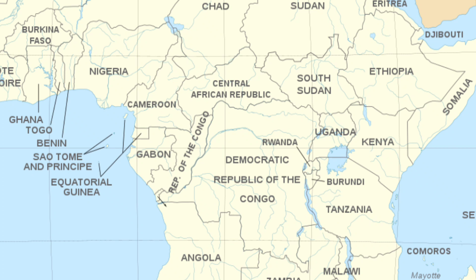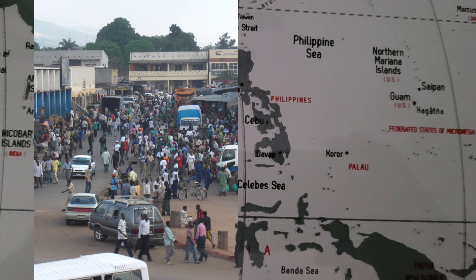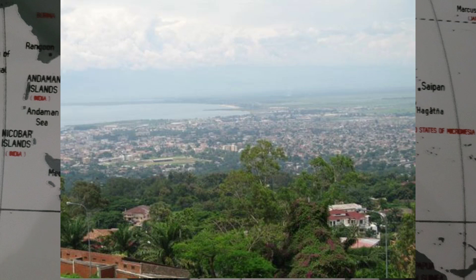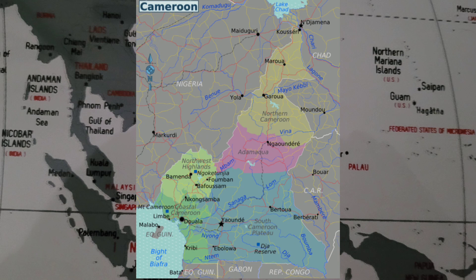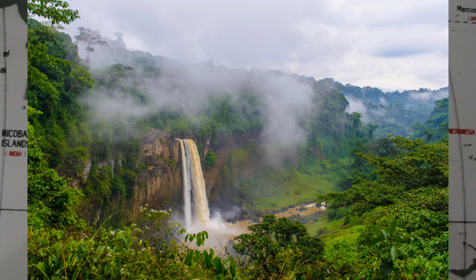Do you know much about Central Africa countries? Burundi is a small landlocked country located in East Africa. The population of Burundi is about 11 million people. The country has a tropical highland climate and is known for its beautiful mountainous landscape. The total area is 27,834 square kilometers or 10,747 square miles. Cameroon is a country in West Central Africa. Its nearly 27 million people speak 250 native languages. Its total land area is 475,442 square kilometers or 183,569 square miles.